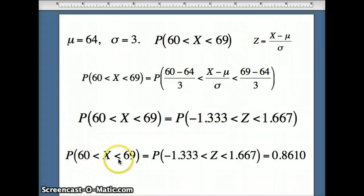So our probability that x is between 60 and 69 is the same as our probability that z is between negative 1.333 and 1.667, which of course is about 0.861.